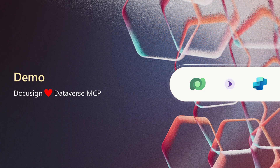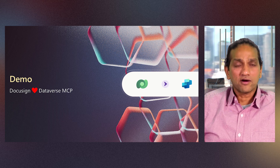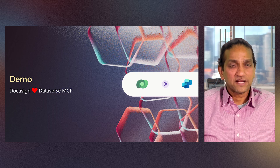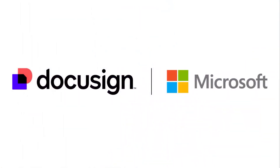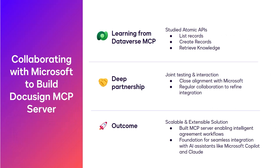To further exemplify this, let's look at another demo for one of our close partners, DocuSign. DocuSign is a leading provider of digital agreements — think electronic signatures. They already have a Power Platform connector, and while that is being heavily used for Power Platform applications, they are also using this to bootstrap their MCP server. Partnership with Microsoft allowed us to leverage insights from the Dataverse MCP server, particularly its use of atomic APIs like list records, create records, and retrieve knowledge. These insights helped us design dynamic, reusable actions for DocuSign agreement workflows. Through joint testing and alignment with Microsoft, we built a scalable, extensible solution that powers the experience you're about to see.